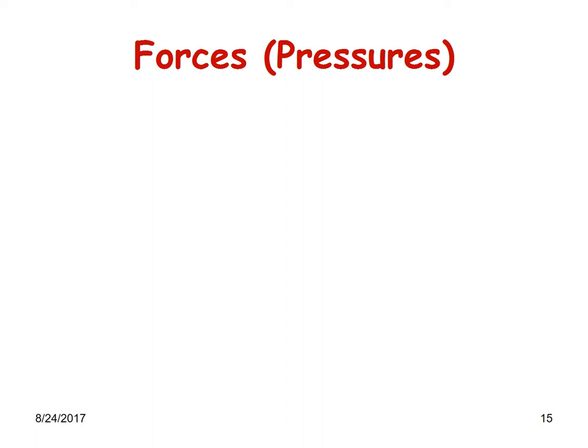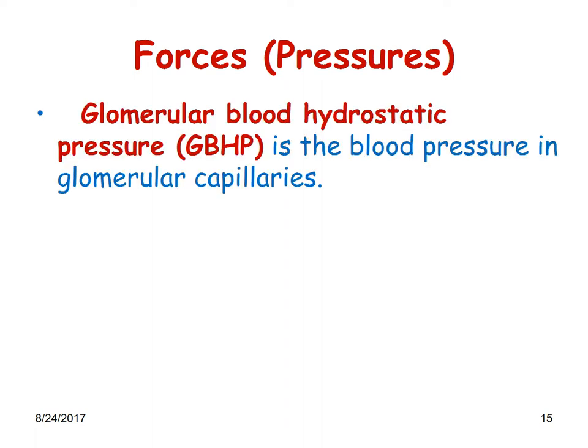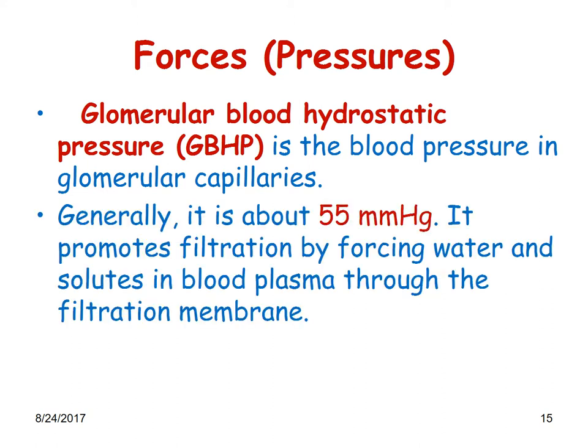Let us look at each force individually. Glomerular blood hydrostatic pressure, or GBHP, is the blood pressure in the glomerular capillaries — generally around 55 millimeters of mercury. It promotes filtration by forcing water and solutes in the blood plasma through the filtration membrane.